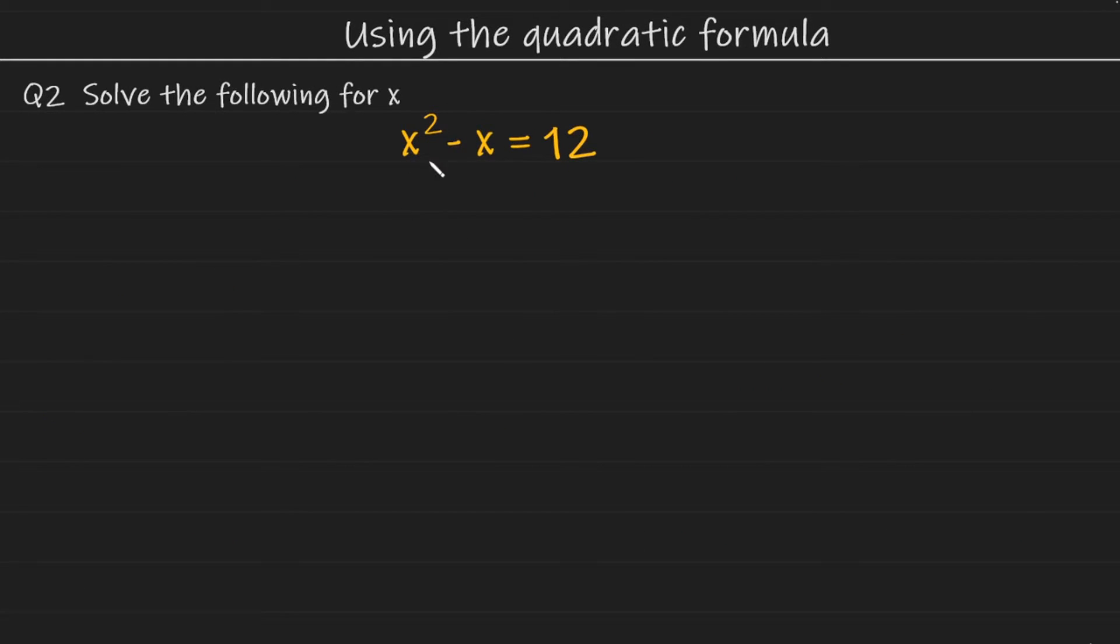Now for our second example, we have x squared minus x is equal to 12. We cannot use the quadratic formula to solve this straight away, as the equation is not equal to 0.